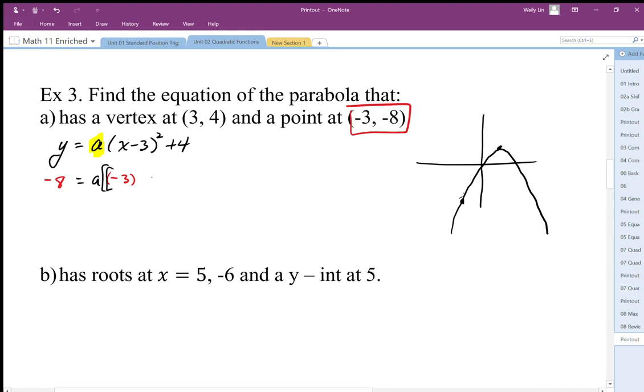So we end up with -8 = a((-3) - 3)² + 4.